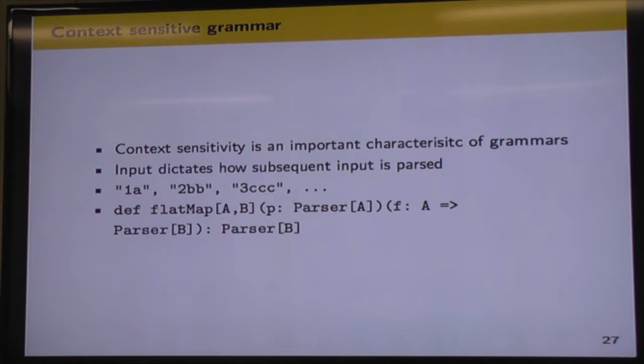And finally we look at context-sensitive grammars. A context-sensitive grammar is one where, or a parser at least, is one where some input dictates how subsequent input is parsed. It's probably easiest to see this from the examples. We have the number one followed by one A character, number two followed by two Bs, and so on. So you can see that the integer at the beginning of the string is specifying how many repetitions of some character we should see afterwards.